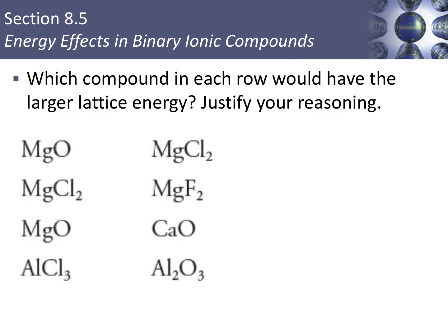Pause the video and compare each row of compounds — for example, magnesium oxide versus magnesium chloride. Which has the larger lattice energy and why? Between magnesium oxide and magnesium chloride, magnesium oxide has +2 and −2 charges, which are higher and lead to a stronger force of attraction and larger lattice energy. Between magnesium fluoride and magnesium chloride, the ion charges are the same, so we look at radius — fluorine is smaller than chlorine, so when the ions are closer together we get a stronger force of attraction and a larger lattice energy.